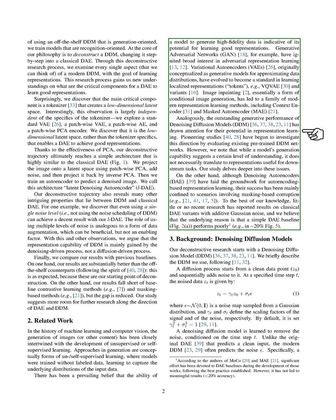Our study delves deeper into these issues. On the other hand, although denoising autoencoders, DAE, have laid the foundation for autoencoding-based representation learning, their success has been mainly limited to scenarios involving masking-based corruption. To the best of our knowledge, little or no recent research has reported results on classical DAE variants with additive Gaussian noise. We believe that the underlying reason is that a simple DAE baseline performs poorly.